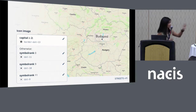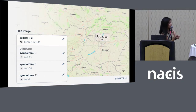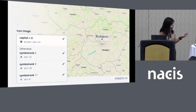What's happening with this expression is that we're deciding that capitals — national capitals, which are given the number two — get this special border dot. Otherwise, we use symbol rank to decide what icon we want to use.